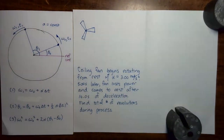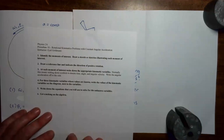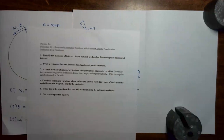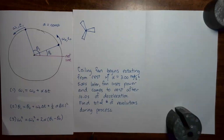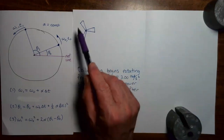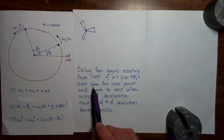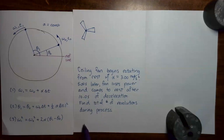Now we're going to solve a problem involving an object moving with a constant angular acceleration — or more precisely, with two different constant angular accelerations. We have a ceiling fan that begins rotating from rest with a constant angular acceleration of three radians per second squared. Then five seconds after the fan began to rotate, it loses power, and over a 10-second time interval, gradually comes to rest. We want to know the total number of revolutions the ceiling fan made during the process.